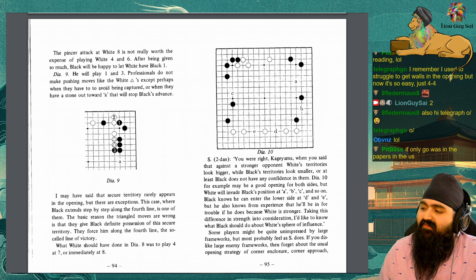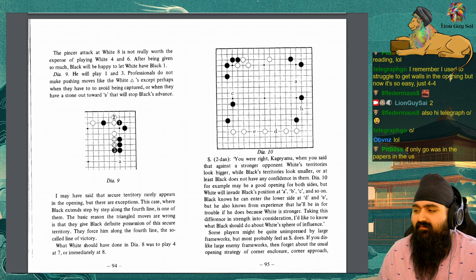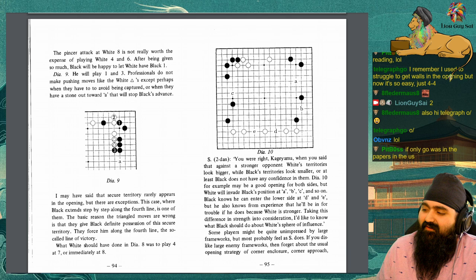What should white have done in diagram 8 was to play 4 at 7 or immediately at 8. So true done. You were right, Kageyama, when you said that against a stronger opponent, white's territories look bigger, while black's territories look smaller, or at least black doesn't have any confidence in them.